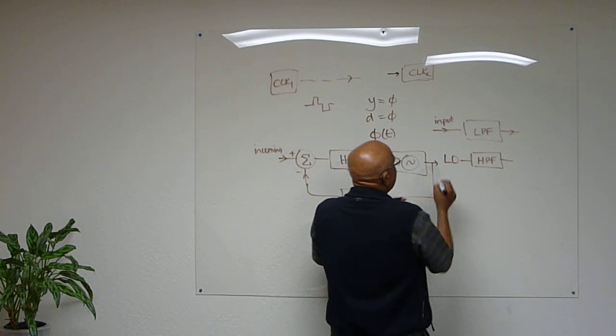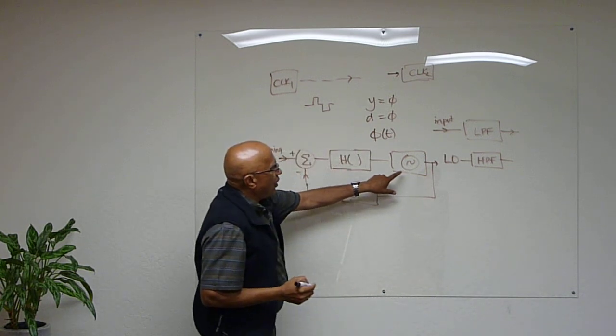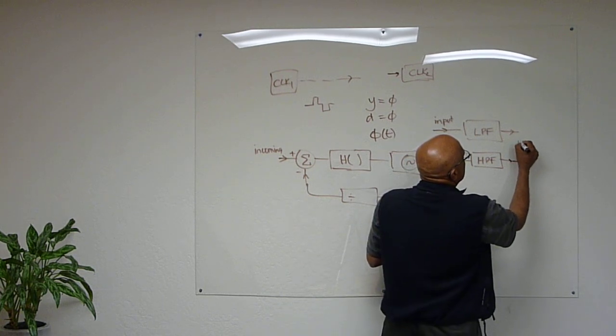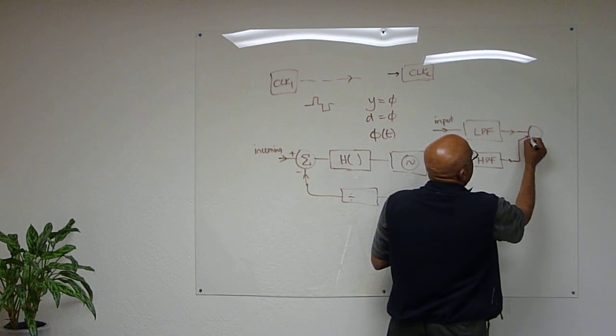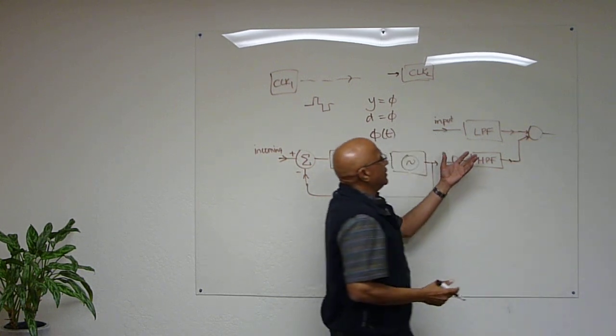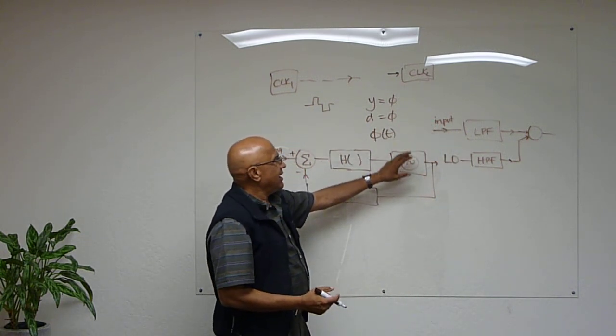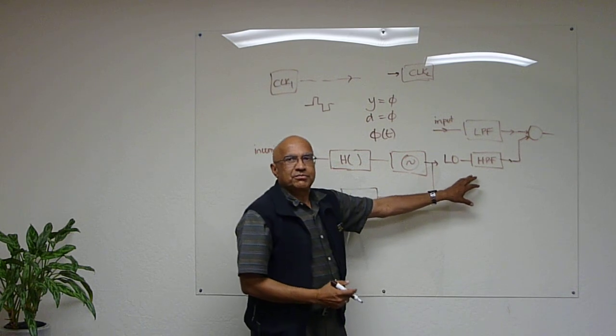So when you look at, if you try examining the output of this whole clock, the total noise you see is a combination of the input noise, which has been low-pass filtered, and the local oscillator noise, which has been high-pass filtered.